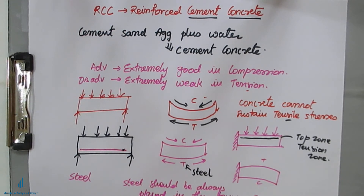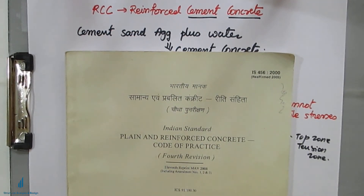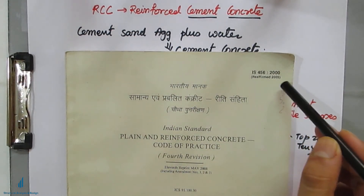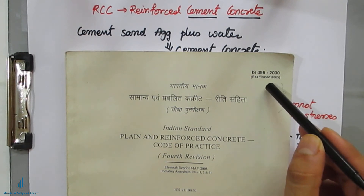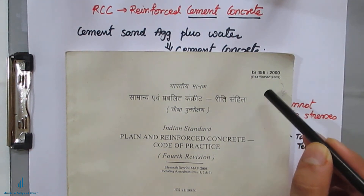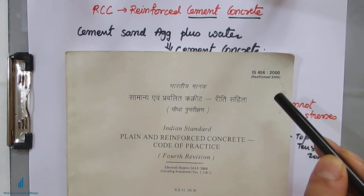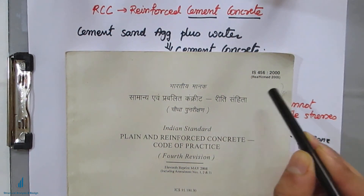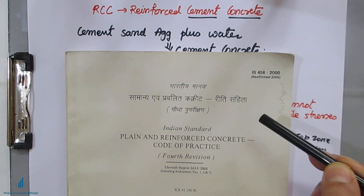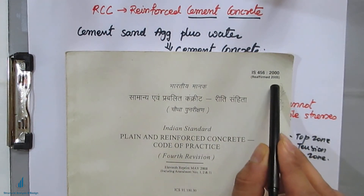There are various codes for every country, but for Indian standards we refer to IS456:2000, which is reaffirmed in 2005. All the analysis and design will be based on the formulas given in IS456:2000. So henceforth, for solving the problems we shall use this IS456:2000 codebook, which is the Plain and Reinforced Cement Concrete code reaffirmed in 2005.